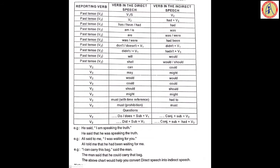When the reporting verb is past form — 'said' or 'said to' — and in the direct speech quotations you observe present tense V1 or V1s form, it should be changed into past form V2 in indirect speech. To keep it simple: if the tense in the quotations is present, change it into past. V1 or V1s changes into V2.